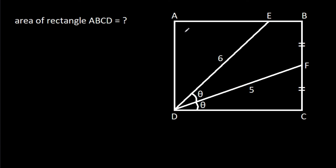In this video, we have been given that ABCD is a rectangle and BF is equal to CF, DE is 6, DF is 5, angle EDF is theta, and angle CDF is theta. We have to find the area of ABCD.